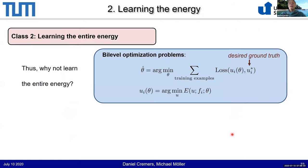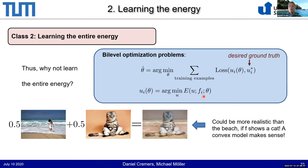This motivates a second class of combinations: learning the entire energy E(u; f, theta), not just the regularizer. The formulation is still a bi-level optimization problem comparing the argument minimizing the energy to ground truth. Now I parameterize the entire energy. This resolves parts of the convexity problem because the energy being convex now allows the data-dependent assignment: if the data suggests the reconstruction should be a cat, it's fair for the energy to assign that a more realistic value than the beach image, even if the beach image is globally more realistic.